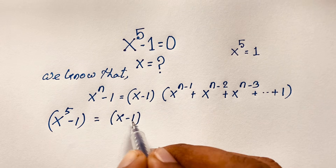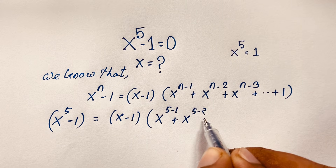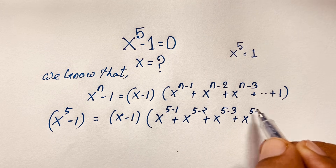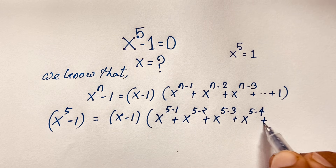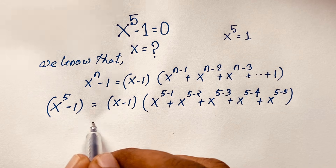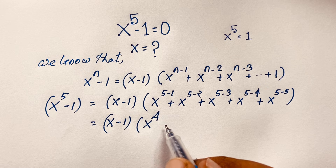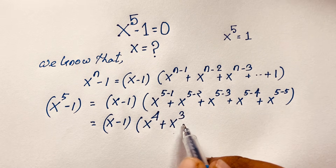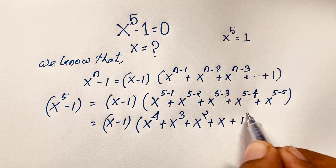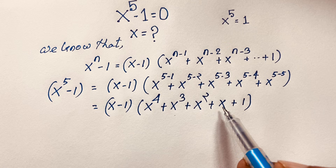It will be (x minus 1) times (x to the power 5 minus 1), because n is equal to 5. This is x to the power 5 minus 2, x to the power 5 minus 3, and so on. The exponents are 4, 3, 2, 1, and x to the power 5 minus 5 which is 0. So we find x to the power 5 minus 1 equals (x minus 1) times (x to the power 4 plus x to the power 3 plus x squared plus x plus 1).